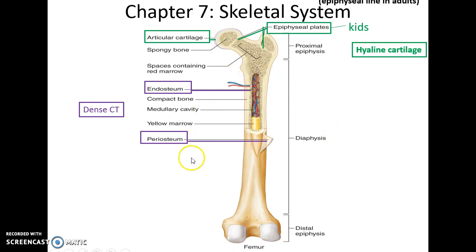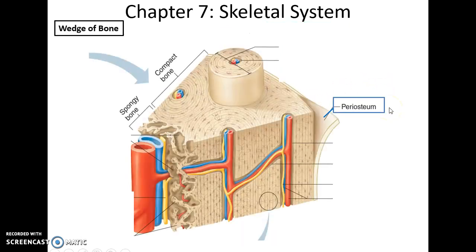Dense connective tissue wrapped around the outside of the bone where you do not have articular cartilage is called the periosteum. Lining the inside and going all around the bone tissue in all the nooks and crannies is the endosteum, also made of dense connective tissue. So on a wedge of bone: periosteum on the outside, primarily compact bone tissue, with a little spongy bone tissue before you reach the medullary cavity.